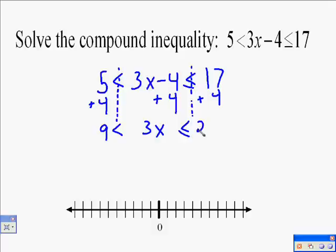This enabled us to get 3x by itself in the middle. We then will be dividing all three sides again by 3, so that x is by itself. 9 divided by 3 and 21 divided by 3, which simplified are 3 less than x less than or equal to 7.